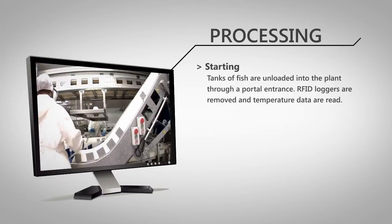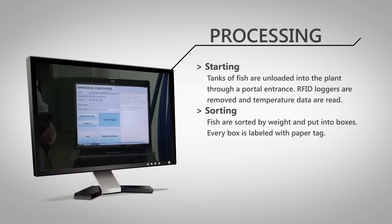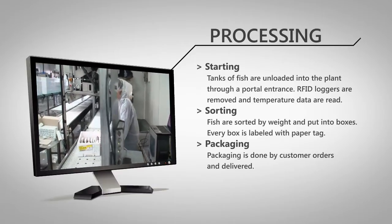The processing machine automates part of the production of boxes of fish sorted by weight and type. There are operators that put sorted fish into boxes and attach a label on each one.